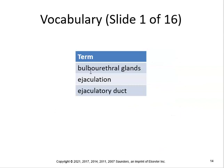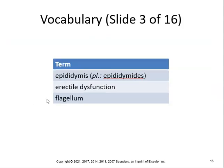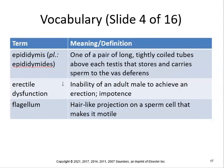Key vocabulary: the bulbourethral glands are a pair of exocrine glands near the male urethra, also called Cowper's glands. Ejaculation is the ejection of sperm and fluid from the male urethra. The ejaculatory duct is the tube through which semen enters the male urethra. The epididymis is the pair of long, tightly coiled tubes above the testes that store and carry sperm to the vas deferens.